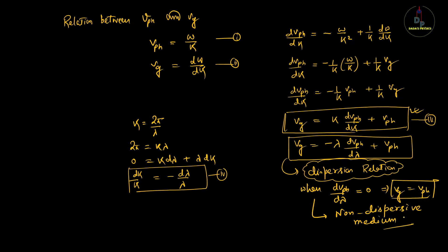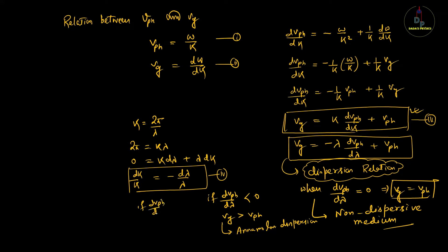If dv_ph/dλ < 0, then group velocity is greater than phase velocity — this is anomalous dispersion. If dv_ph/dλ > 0, then group velocity is less than phase velocity — this is normal dispersion.